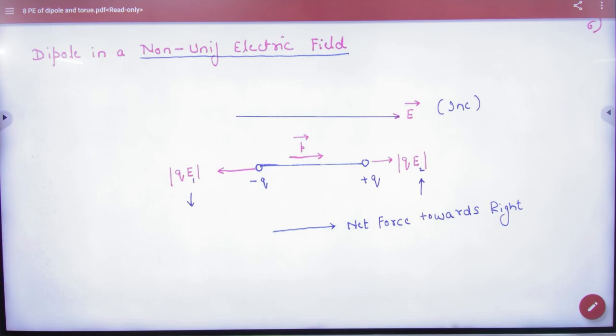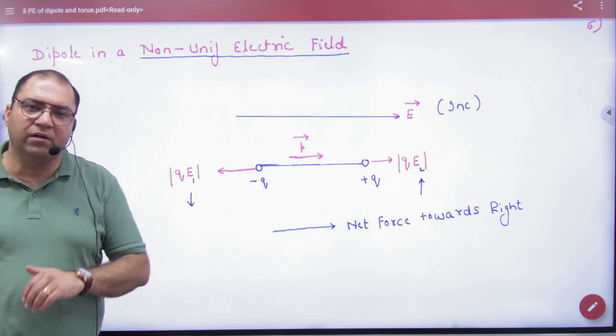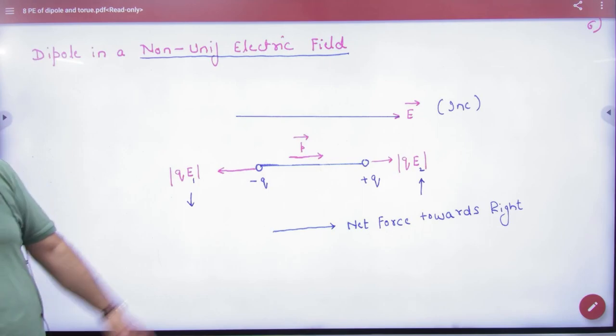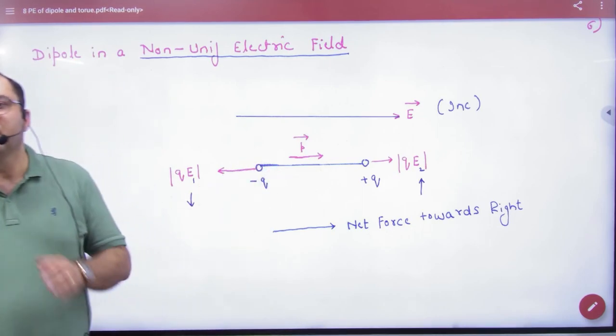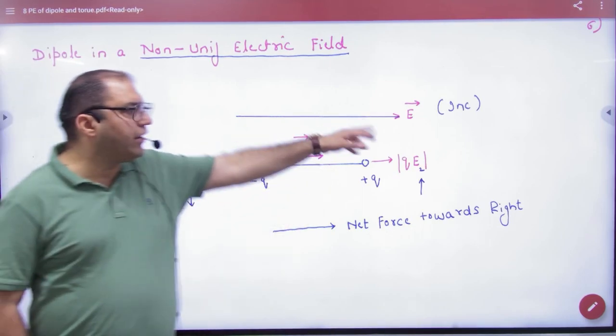Dipole is in non-uniform electric field because now we have thought that dipole where is? Uniform electric field. I think it's non-uniform. Non-uniform, how is it?